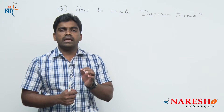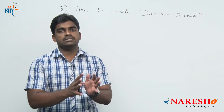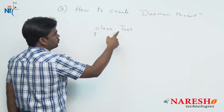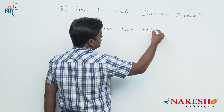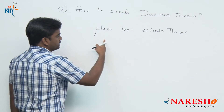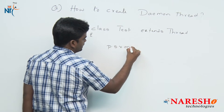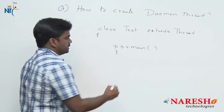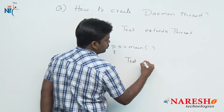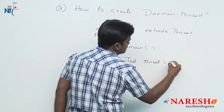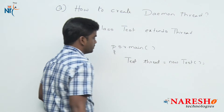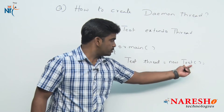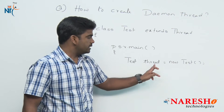But in a Java application, how do we create a daemon thread? By default, every thread works like a non-daemon thread as soon as it is created. For example, suppose you take a class — class Test — and make it a thread class by extending from the Thread class. In the main method, we create an object for Test: Thread t = new Test(). By default, this thread is working like a non-daemon thread.